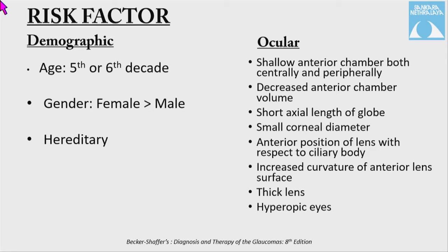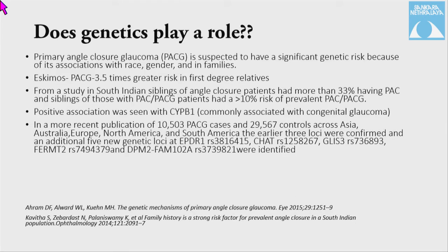Shallow anterior chambers and narrow angles commonly run in relatives. Ocular risk factors include shallow anterior chamber (both peripheral and central), decreased anterior chamber volume, short axial length, small corneal diameter, anterior position of the lens relative to the ciliary body, increased curvature of the anterior lens surface, thick lens, and hyperopic eyes. Genetics plays a role — PACG is suspected to have a specific genetic risk based on its association with race, gender, and family history.